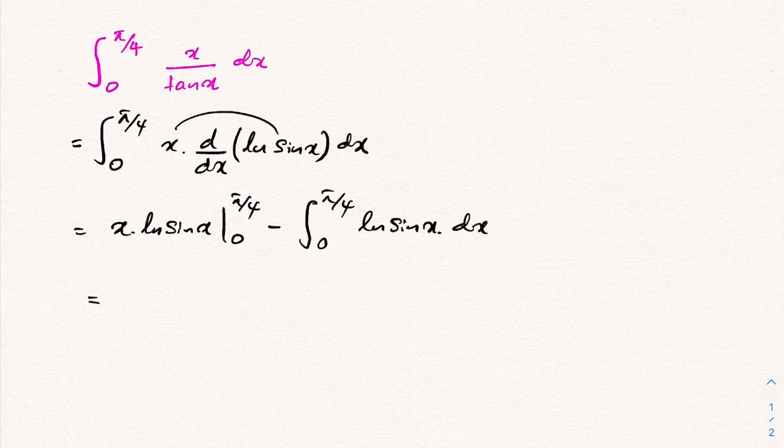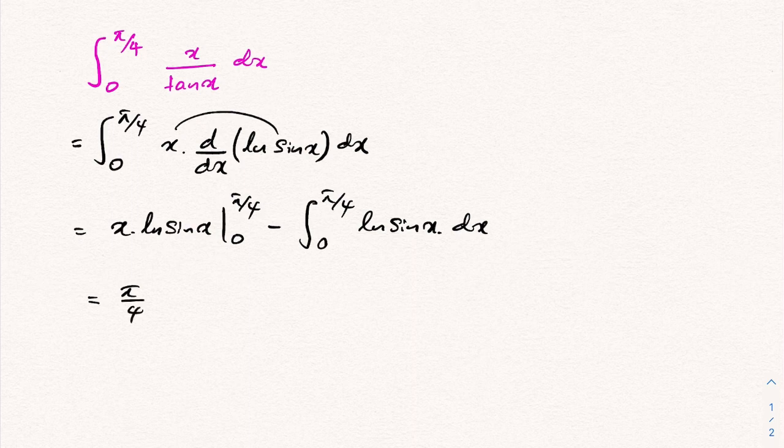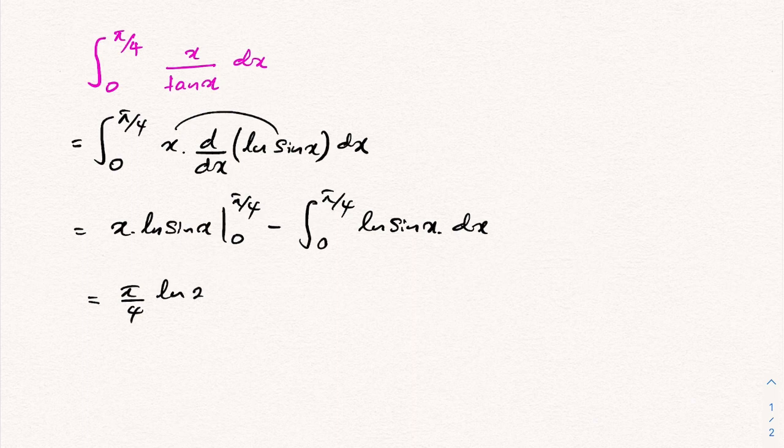If we apply the limit here, we have pi over 4 natural log of sine of pi over 4. We know this is 1 over square root of 2, so we can write 2 to the minus 1 half, minus